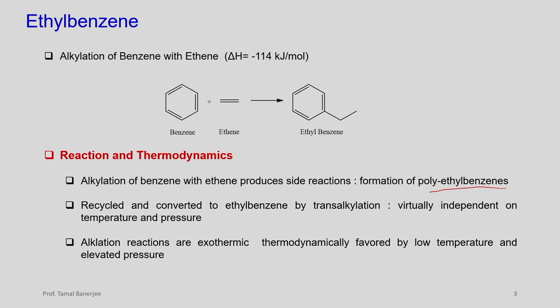A plus B can combine and form C, D, E, F — different compounds. Here the different compounds are polyethyl benzene: diethyl benzene, triethyl benzene, trimethyl benzene — all clubbed together as polyethyl benzene. We would not worry because there are two approaches: have a selective enough catalyst to produce lesser polyethyl benzene (PEB), and even if they are formed, the polyethyl benzenes are recycled and converted to ethyl benzene by transalkylation.